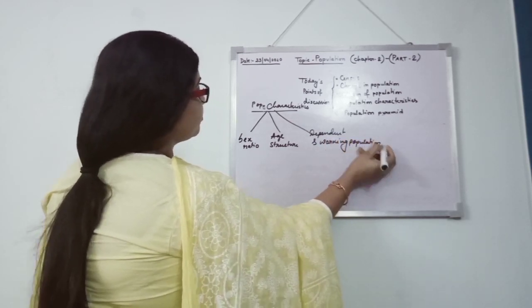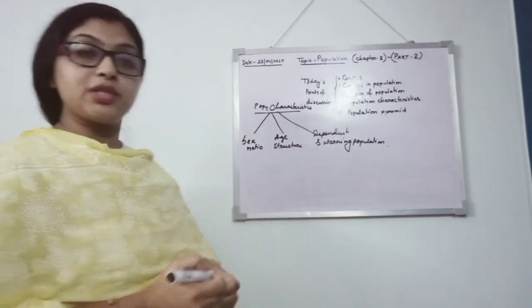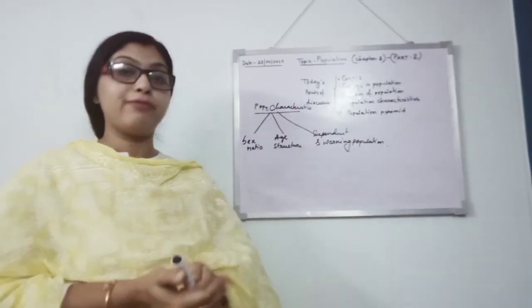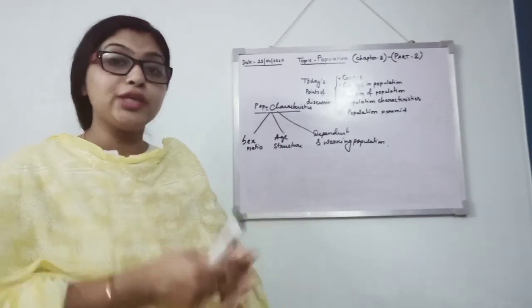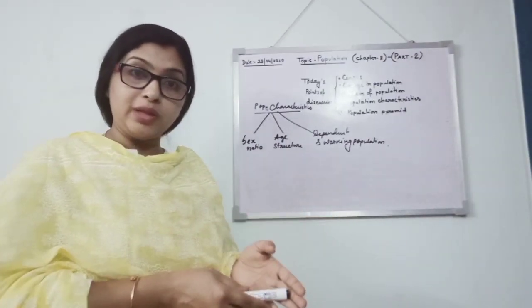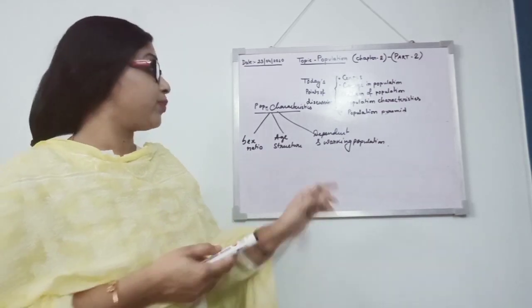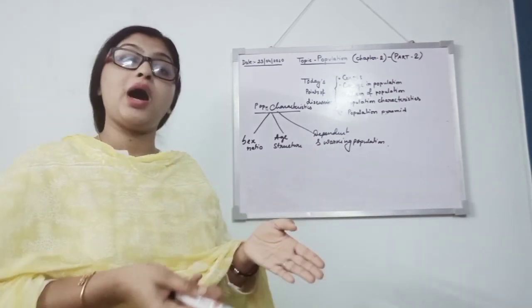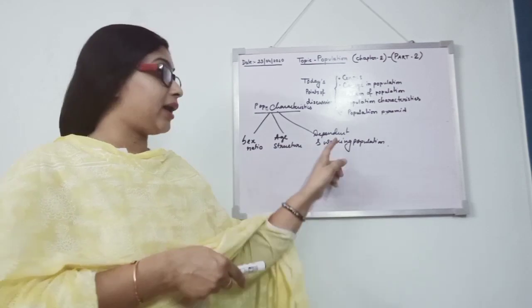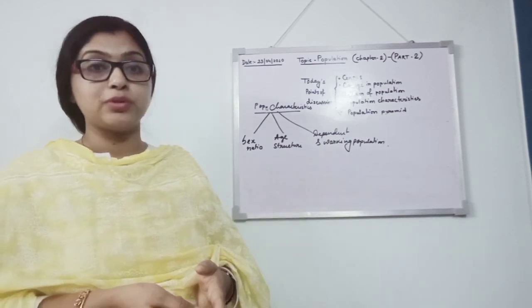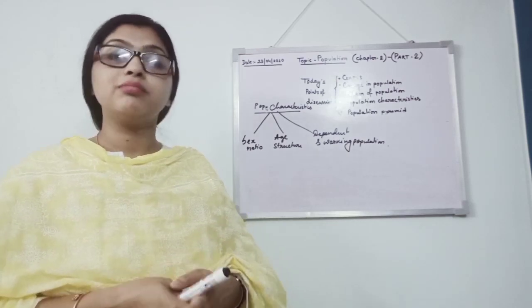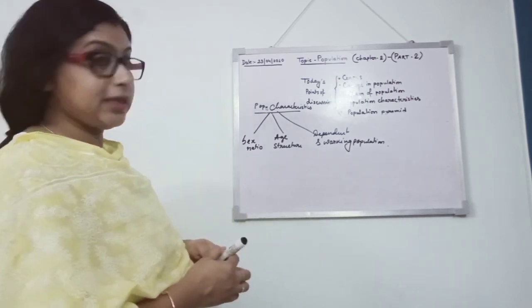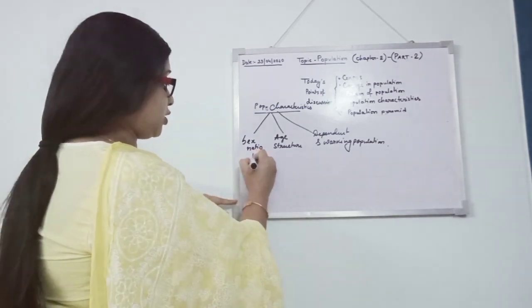So here, through sex ratio, we can get to know about male and female. Through age structure, we can get to know about different age groups like children, like adult, like aged group. And dependent means who are not working, and working means those who are producing and somehow engaged in some production system. So here, we will get to know about the sex ratio.